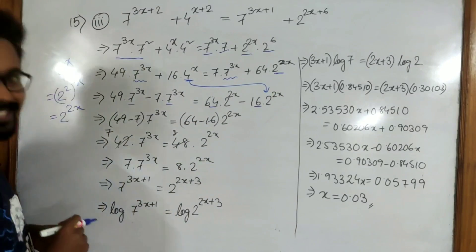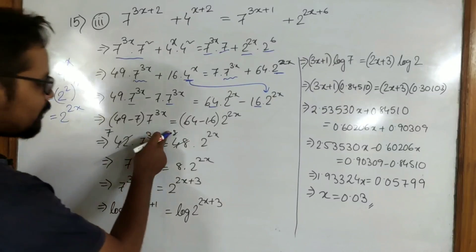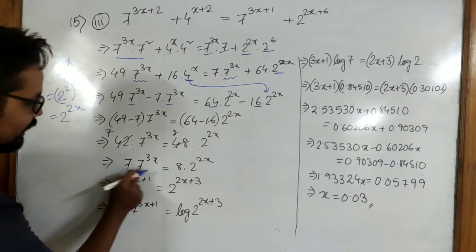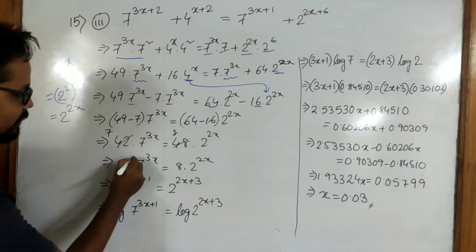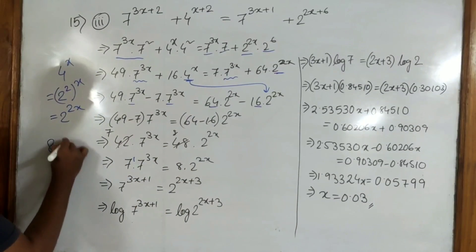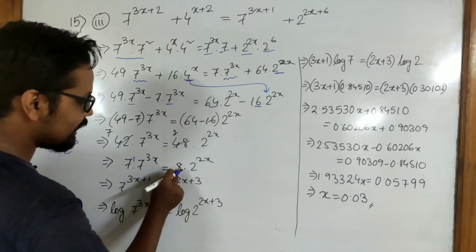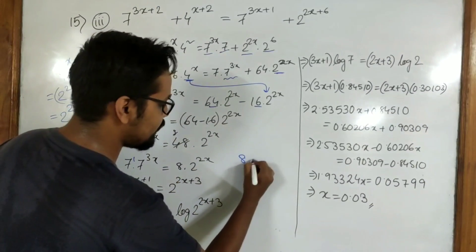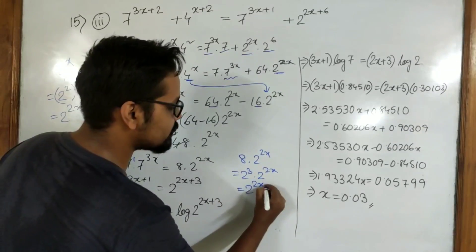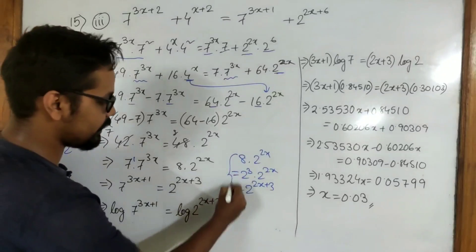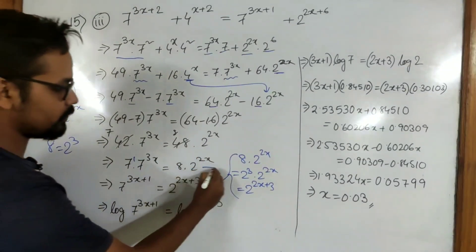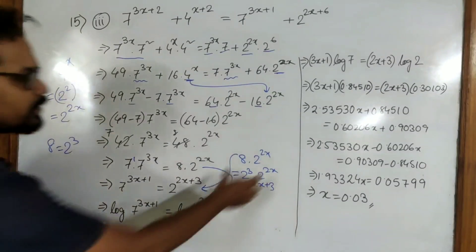Now 42 and 48 we can cancel by 6, so it becomes 7 and 8. We have 7 into 7 to the power 3x and 8 into 2 to the power 2x. Since the base is same, powers are added: 3x plus 1. Then 8 can be written as 2 to the power 3, so 8 into 2 to the power 2x means 2 cubed into 2 to the power 2x, which gives 2 to the power 2x plus 3. If you are confused, you can do these steps in the middle.